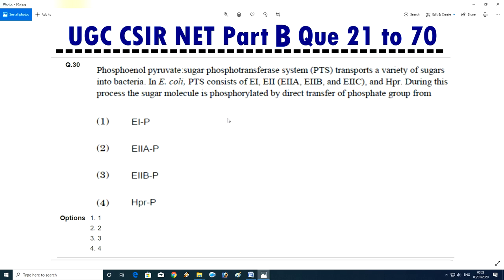Question No.31/32 - Phosphoenolpyruvate sugar phosphotransferase system transfers a variety of sugar into bacteria E. coli. PTS consists of all these. During this process, the sugar molecule phosphorylated by direct transfer of phosphate group from. Answer is third.